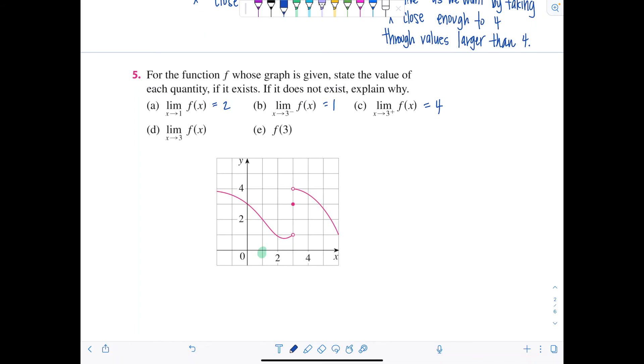Now for part d, it asks for the limit as x approaches 3 of f of x. This is a two-sided limit because notice here they didn't specify if it was from the left or from the right. And remember, this two-sided limit only exists if the limit from the left is equal to the limit from the right. So look how nice. We already found the left-hand and right-hand limits in parts b and c. And now we just have to check, are these equal? No, most definitely not. So that means the two-sided limit as x approaches 3 of f of x does not exist.